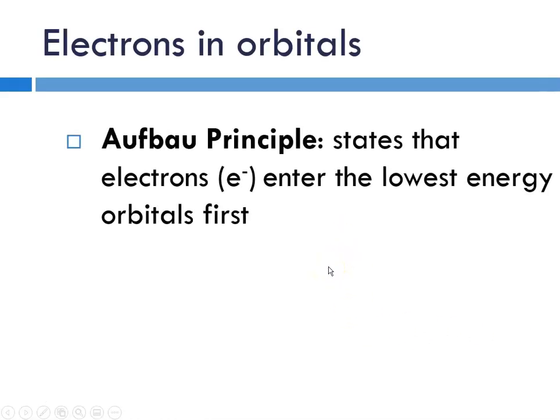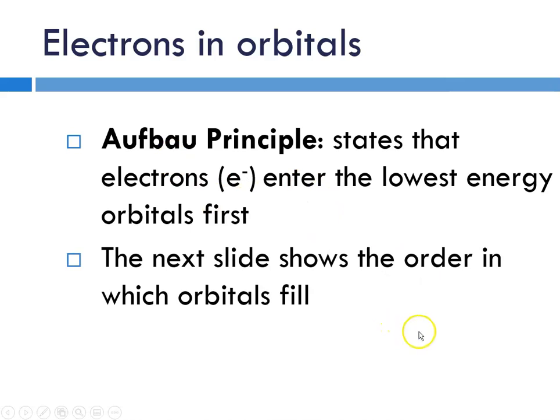There are specific rules that people have figured out about how electrons actually fill orbitals, and the first is the Aufbau principle. It states that electrons enter the lowest energy orbitals first. Remember, the closer you are to the nucleus, the lower the energy, and the principal levels are numbered one through seven, starting at the nucleus and moving out. Aufbau literally comes from the German word to build up.